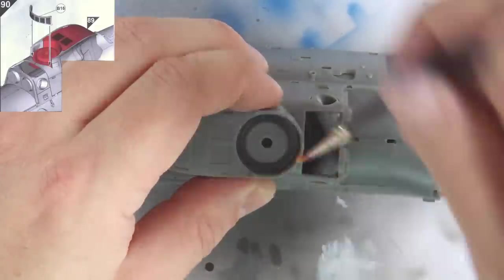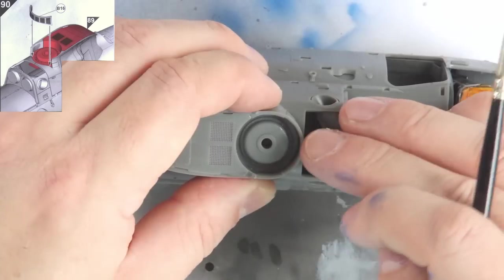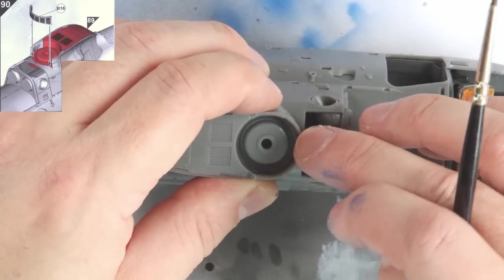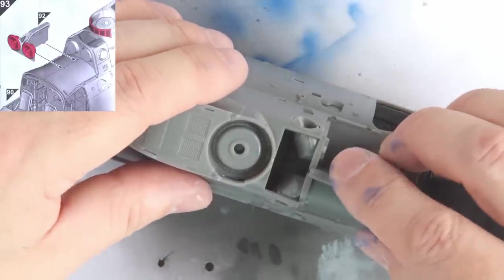In contrast to that, the front of the main rotor body goes on perfectly. Step 93 brings the air intake assembly in, which seemed fine.